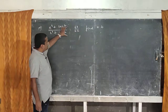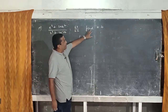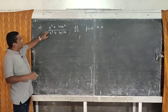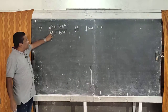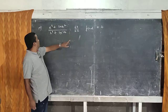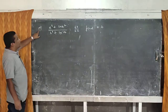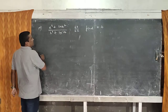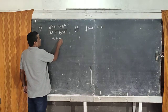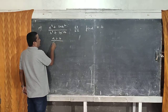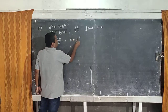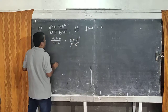Here, you have to find out a:b. Imagine this everything is a, this everything is b, this is c, and this is d. This is question number 19 of your textbook. The formula of componendo and dividendo is: (a+b)/(a-b) = (c+d)/(c-d).